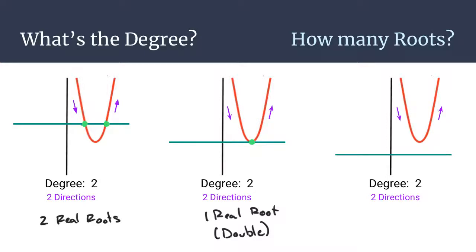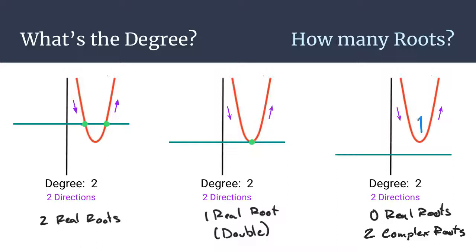For the third graph, you see that there is no x-intercept. Since there is no x-intercept, that means that there are zero real roots. But there still has to be a degree of two because you've got the two directions, and that means that we are going to have two complex roots in this particular graph. That comes because, as you take a look at your parabola, it is opening away from the x-axis. Every time that happens with a graph, that will create two complex roots.